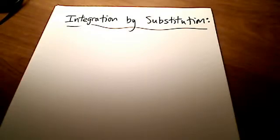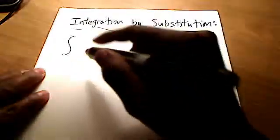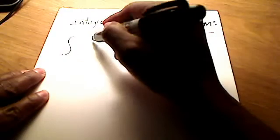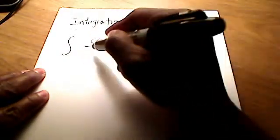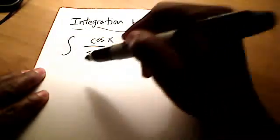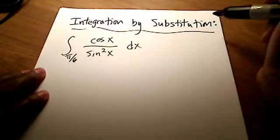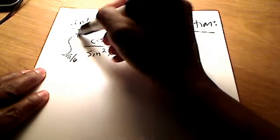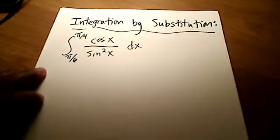In this problem, we're going to do an integration by substitution for this integral. We're going to do it for cosine of x over sine squared x with respect to x. And this is a definite integral, so we're going to do it from our lower limit of pi over 6 to our upper limit of pi over 4.